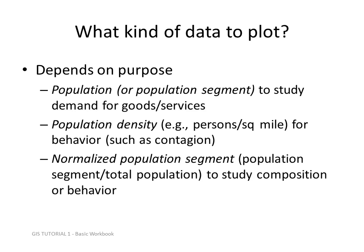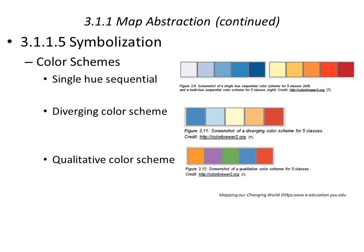The first question has to do with the purpose of the map — what kind of data would we plot? If the purpose of the map is related to population or a segment of a population, we might want to make a choropleth map. Population density might be mapped. We might normalize a population segment, for example, taking an age group or gender group and dividing it by the total population in order to study the composition of the group.